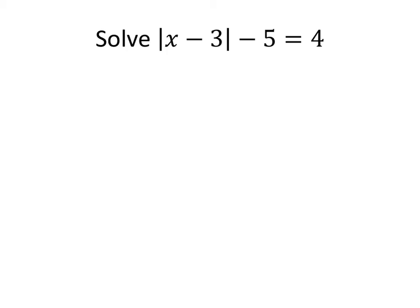Let's do one more example. Solve the equation the absolute value of x minus 3 minus 5 equals 4. Here it's a little bit trickier to know what to do with those absolute values because of the negative 5. So let's add 5 to both sides so that this looks like the previous example. On the left-hand side, the minus 5 and the 5 cancel, and we just get absolute value of x minus 3 equals 9.